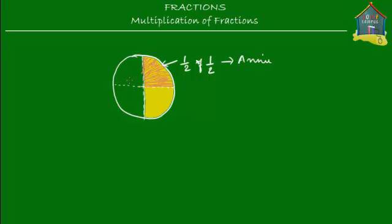Here is piece number one, this is piece number two, this is piece number three, and this is piece number four. So this pizza is actually cut into four pieces, and this slice over here is nothing but one out of those four pieces. So this red slice represents the fraction one out of four of the entire pizza — so half of half equals one quarter, or one fourth, or one upon four.